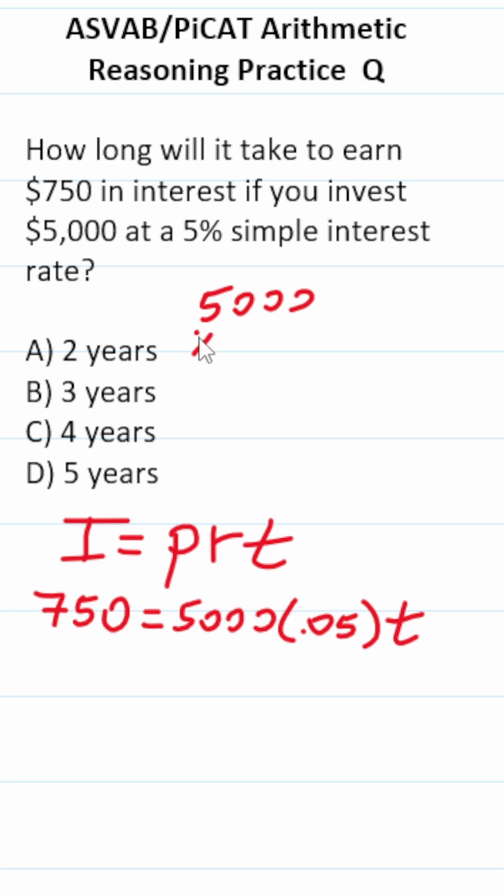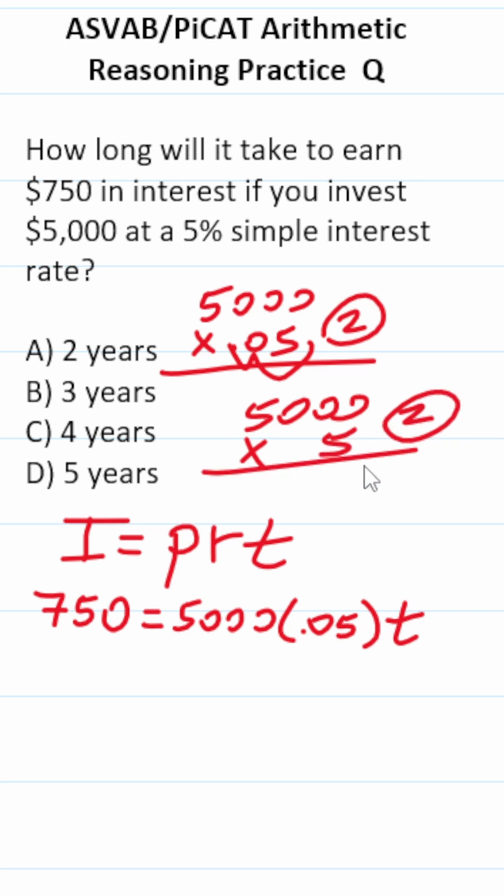To get started, let's do 5,000 times 0.05. Move this decimal two times to the right. That makes this 5,000 times 5, albeit with two decimals to move to the left at the end. This is 0, 0, 0, 25. Move those two decimals back in, 1, 2.